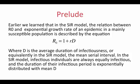Earlier on, we learned that in the SIR model, the relation between R0 and the exponential growth rate of an epidemic in a mainly susceptible population is described by the equation R0 equals 1 plus the growth rate R times the average duration of infectiousness D. As we discussed, in the SIR model the mean serial interval and the mean duration of infectiousness are the same thing, written as D. Infectious individuals are always equally infectious, and the duration of their infectious period is exponentially distributed with mean D.